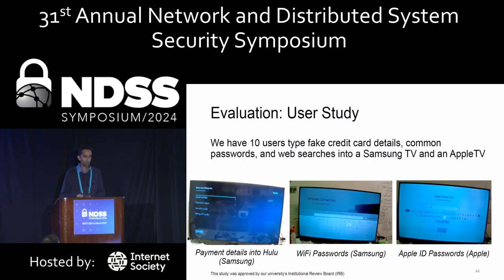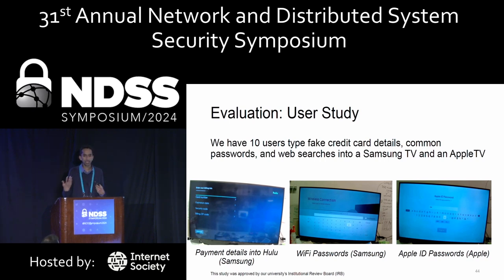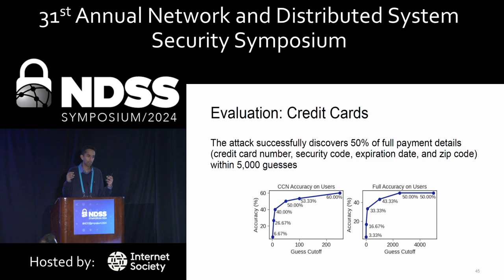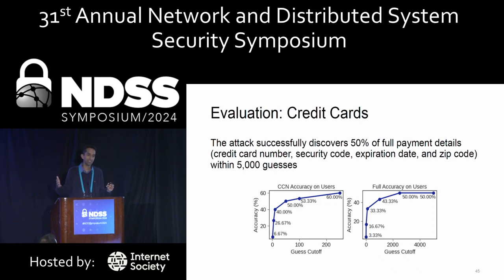We evaluated our entire attack across 10 different users who typed fake but semantically correct credit card details, common passwords, and web searches into both the Samsung and Apple television. For credit cards, our attack can successfully discover 50% of the full payment details within the first 5,000 guesses, where full payment details means getting the credit card number, security code, expiration date, and zip code all exactly correct. This constitutes a large violation of user privacy, as an attacker with this information has sufficient details to make purchases on behalf of the user in electronic settings.